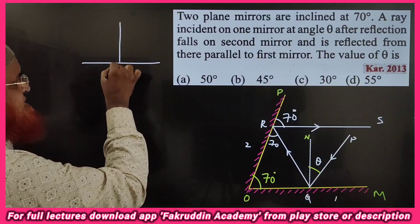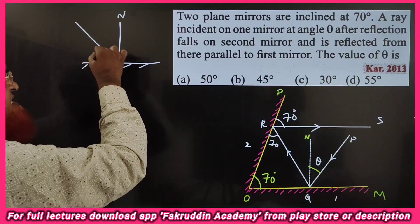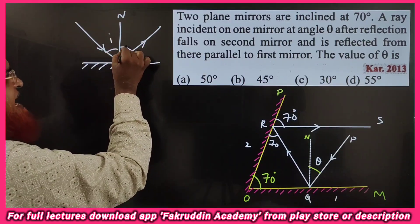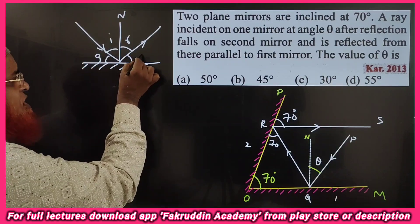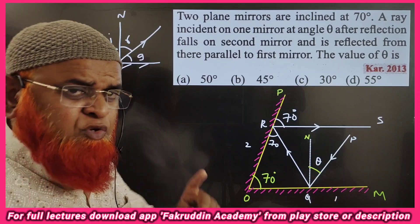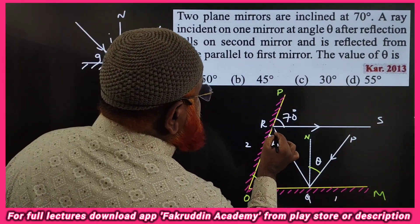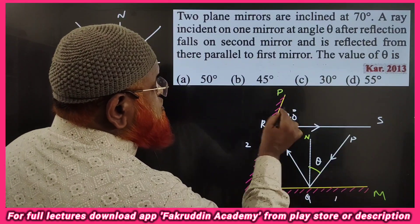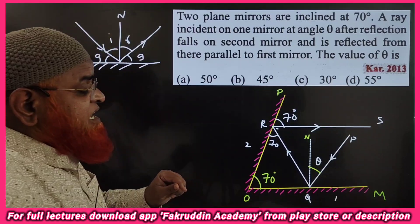Let me explain what a glancing angle is. Consider a mirror with a normal drawn to it. A light ray strikes and reflects back. The angle of incidence and the angle of reflection are there. The glancing angle is the angle between the incoming ray and the mirror surface itself — not the normal. Both glancing angles are always equal. So here, both glancing angles are 70 degrees.